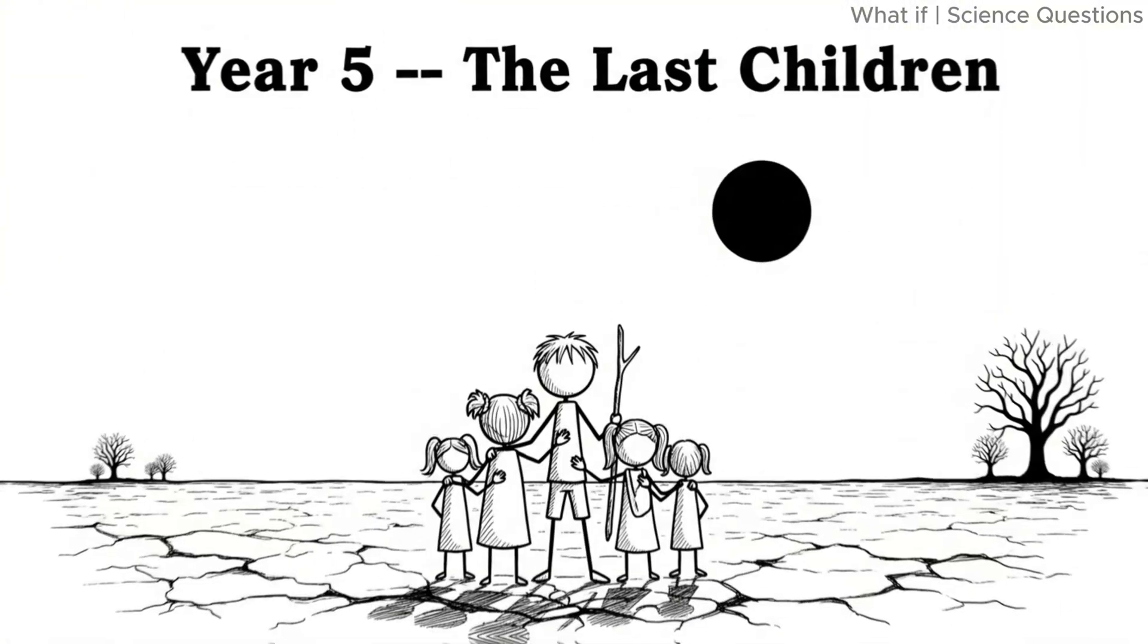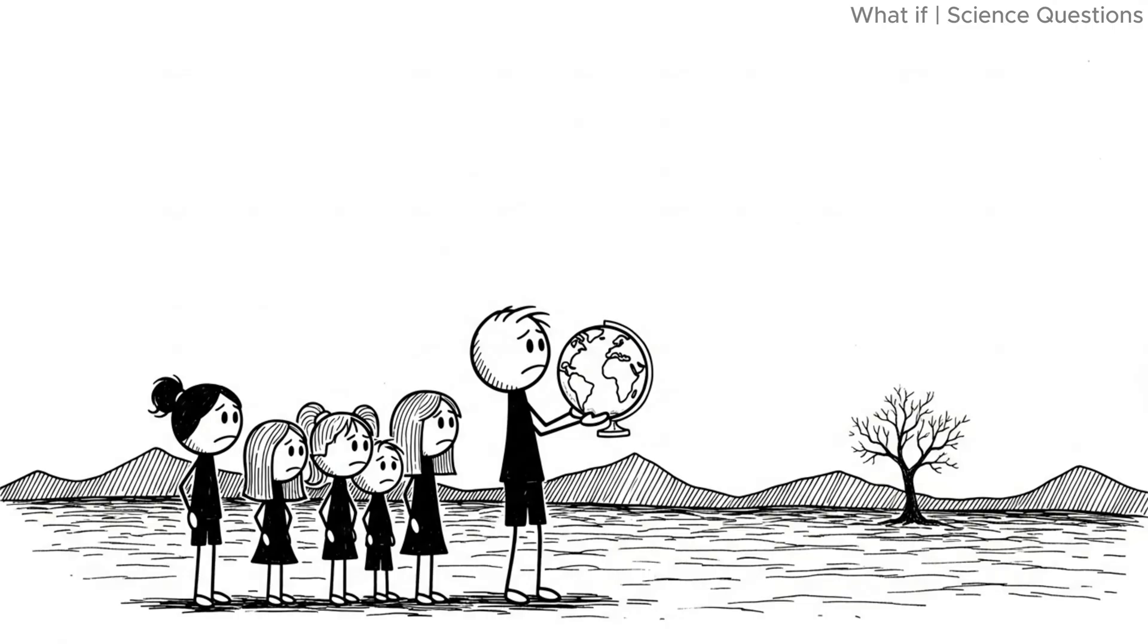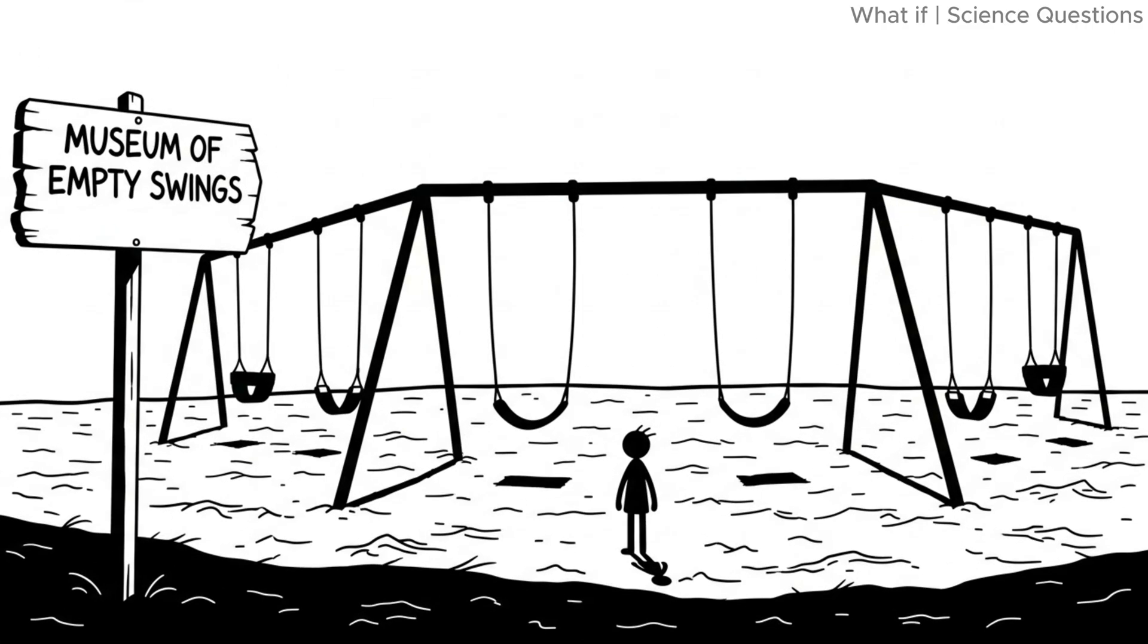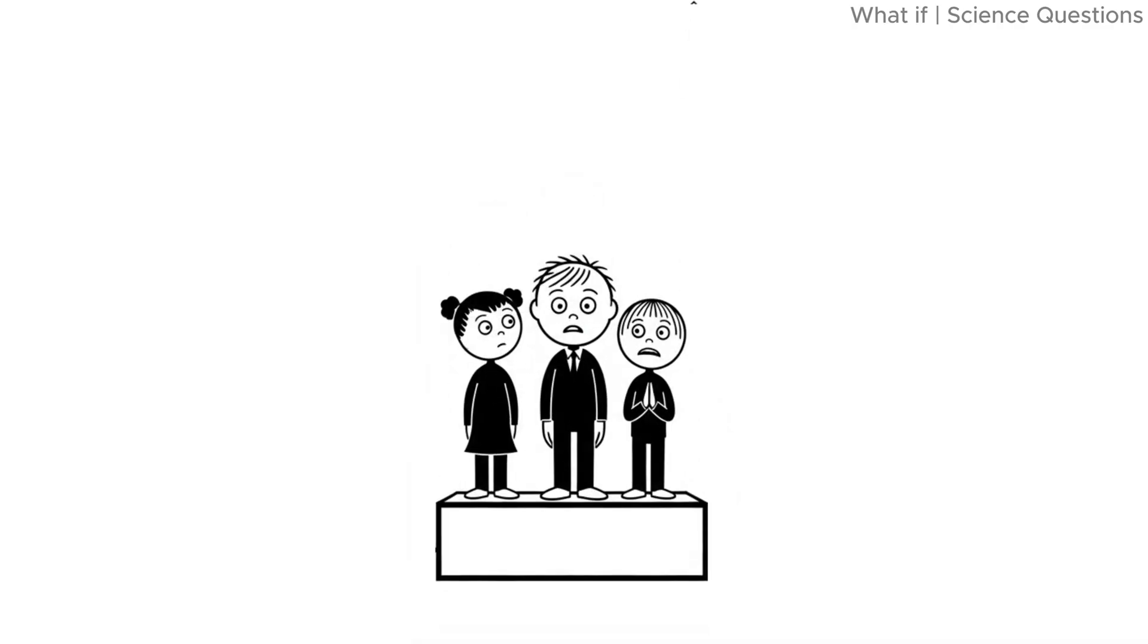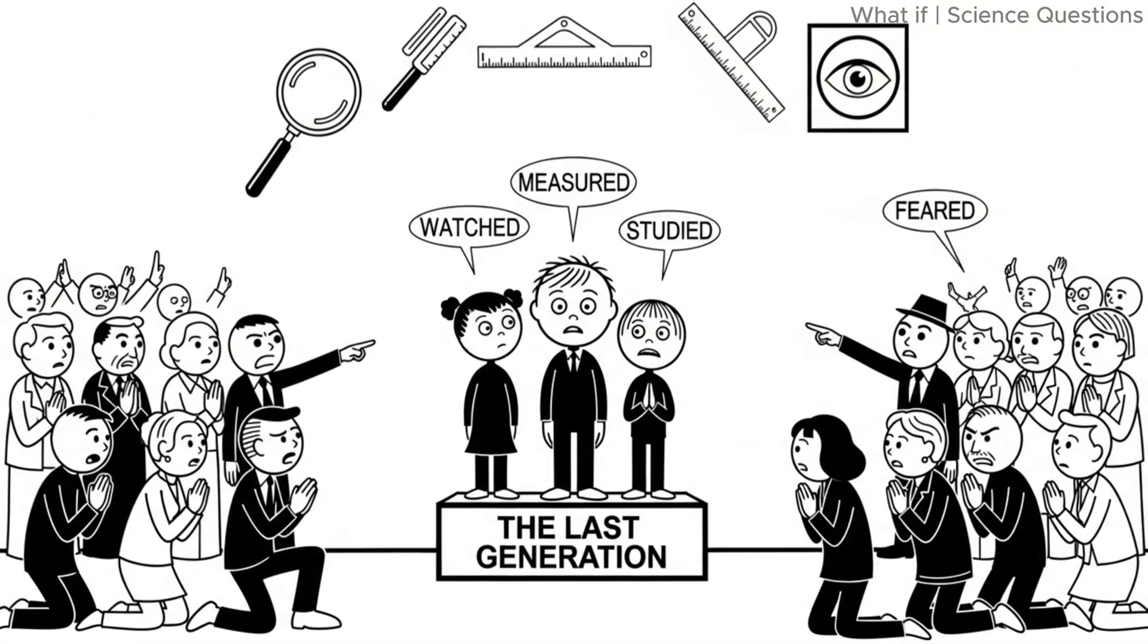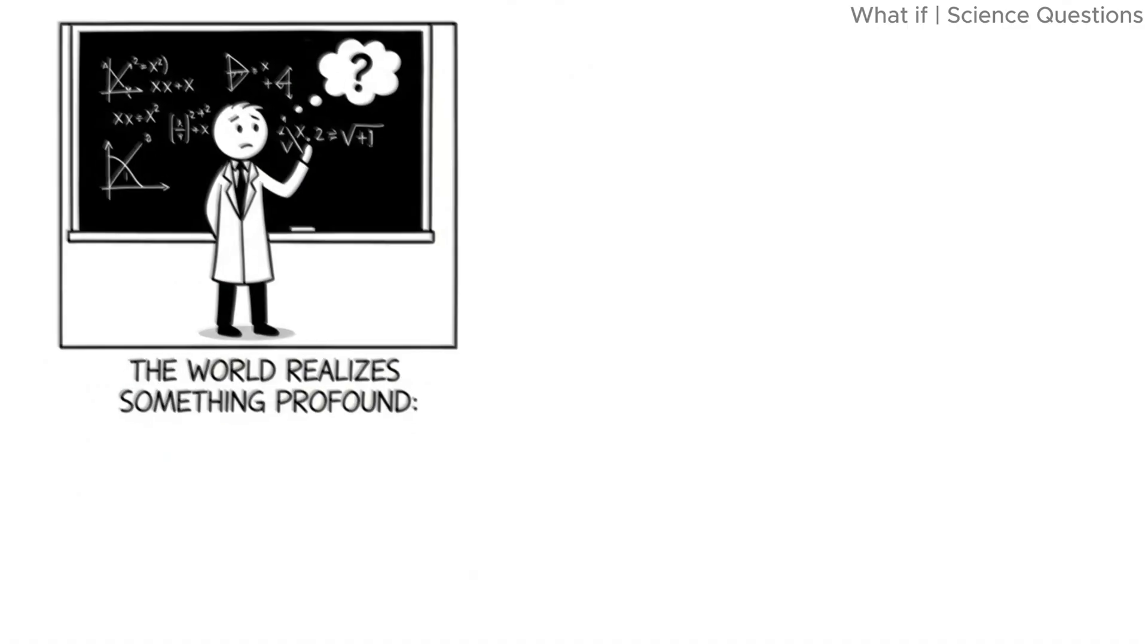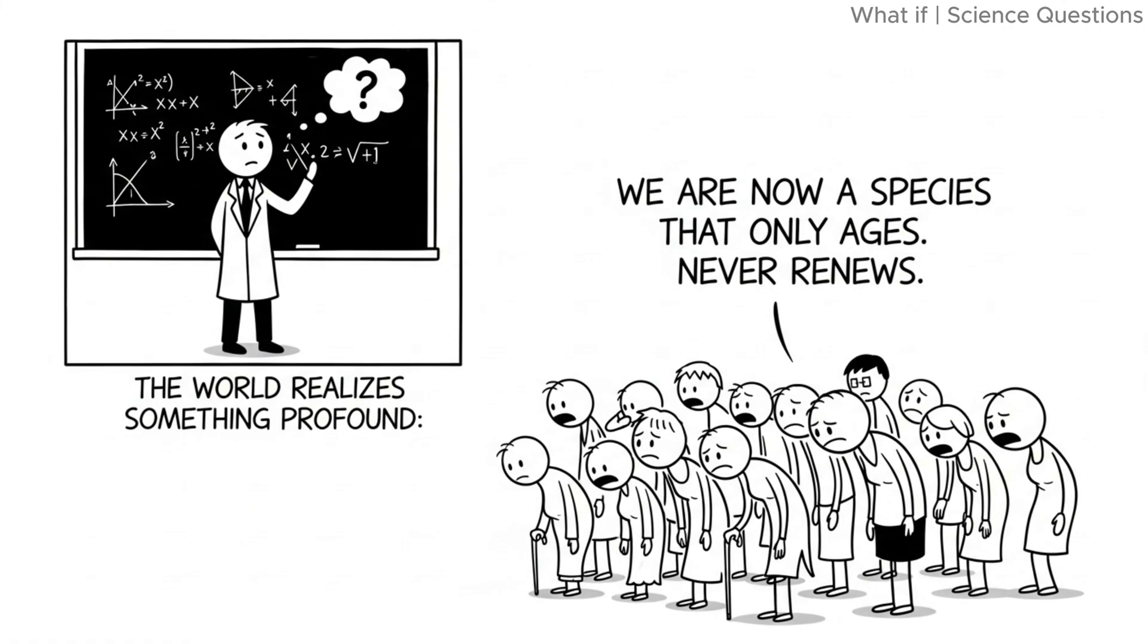Year five. The last children. The youngest humans on earth are now five years old. Every playground is a museum of empty swings. Child influencers become global celebrities because they are literally the last generation. They are watched, measured, studied, and feared. Some people worship them. Others blame them. The world realizes something profound. We are now a species that only ages. Never renews.